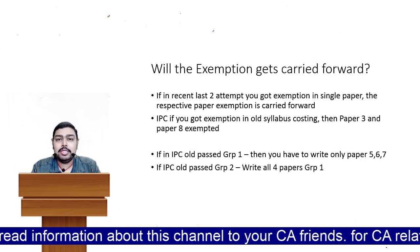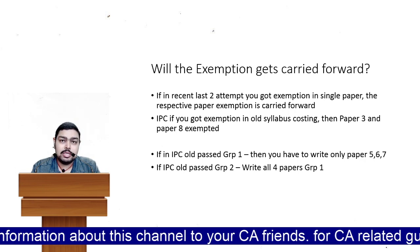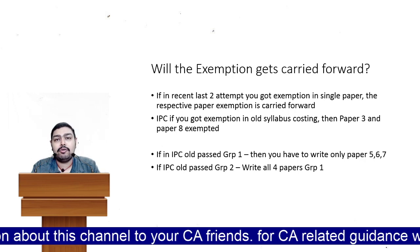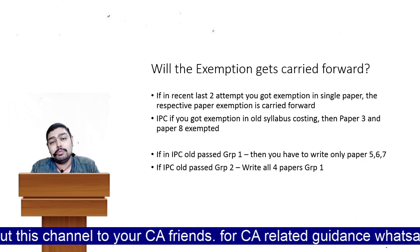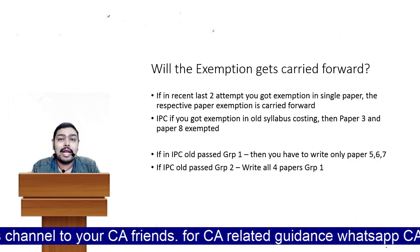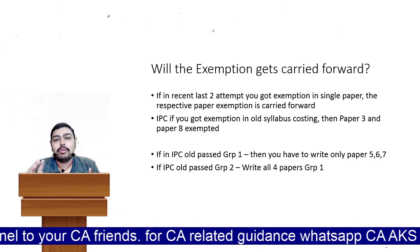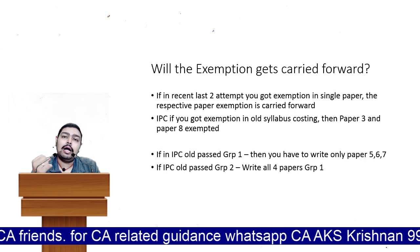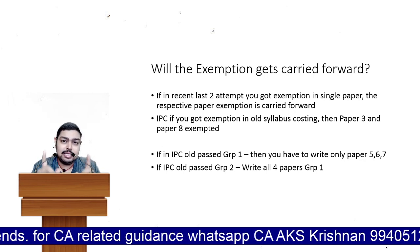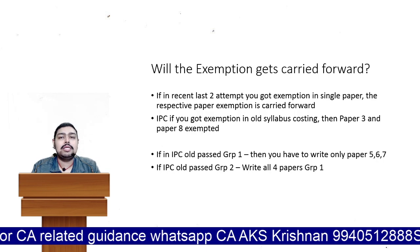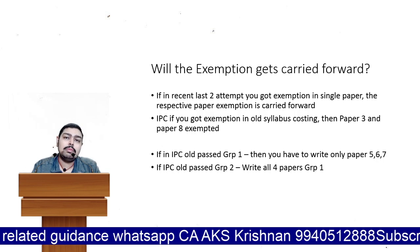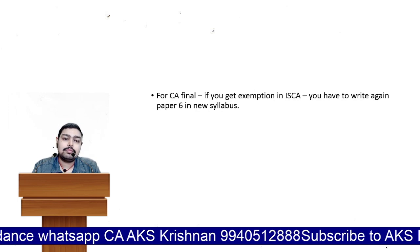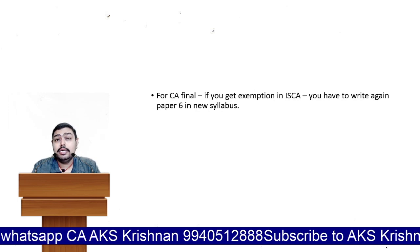There is one tricky thing for Final: if you passed Group 1 in full, you only have to write Group 2. However, if you wrote the old syllabus Group 2 and got exempted in ISCA, there is no carry-forward of that exemption. Paper 6 — the ISCA exemption — will not be carried forward to Paper 6 of the Elective subjects in the new syllabus. You have to write the Elective subject again. For all other papers — 1, 2, 3, 4, 5, 7, and 8 — exemptions are carried forward to the corresponding paper.